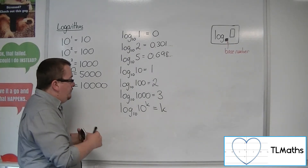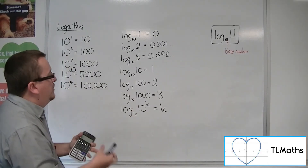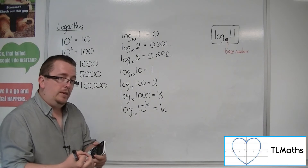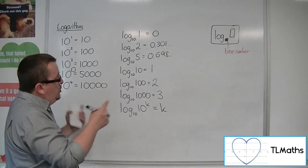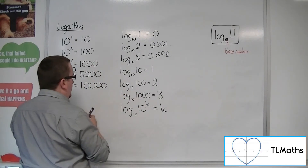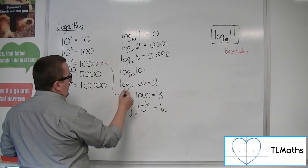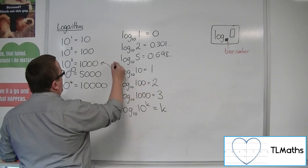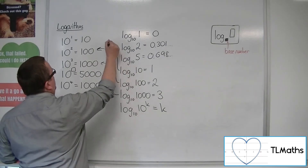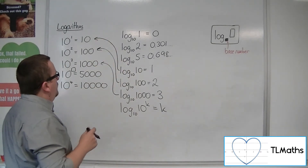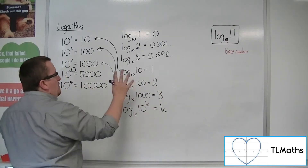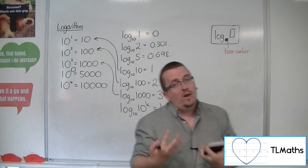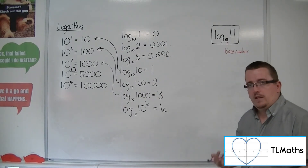You can now see that there is a link between indices and logarithms — between the exponential form and the logarithmic form. What we'd want to do is really generalize it. Log base 10 of 100 equals 2 relates directly to 10 squared equals 100; log base 10 of 10 equals 1 relates directly to 10 to the 1 equals 10. This is the exponential form; this is the logarithmic form. Both of these things mean precisely the same thing — it's just another way of writing the same equation.